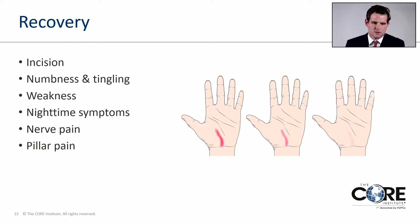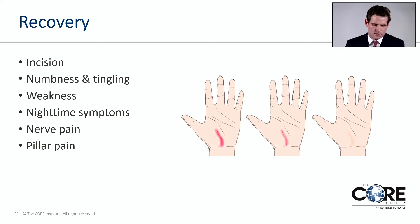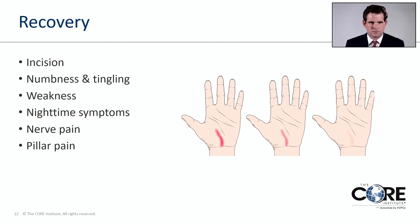Numbness, tingling, and weakness tend to start to improve, but it can take a long time to go away. Numbness can take up to 9 to 12 months to reach a final result — sometimes it does fully resolve, but in more severe cases it may only partially improve and may never go away completely. However, waking up at nighttime and nerve pain tend to improve fairly quickly within a few days after surgery. It's also fairly common to have some deep achiness or soreness at the base of the palm with gripping, which can last around three months but does tend to go away.